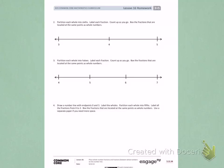This is Module 5, Lesson 16, Side 2. Number 2: Partition each whole into sixths. Label each fraction. Count up as you go.